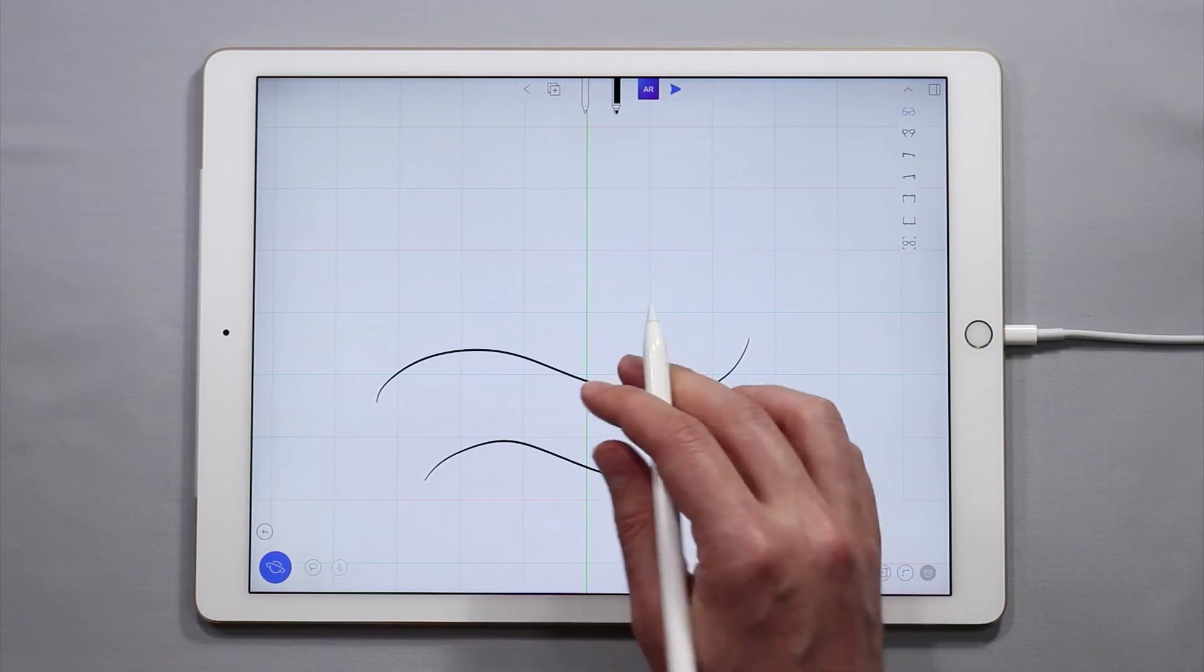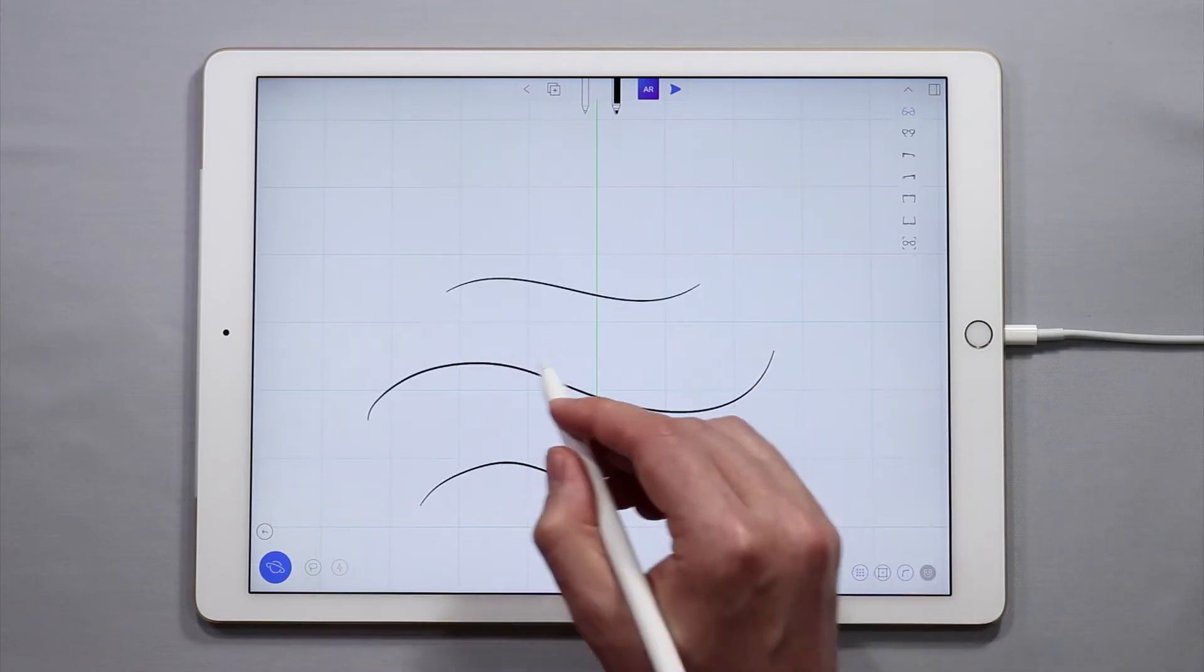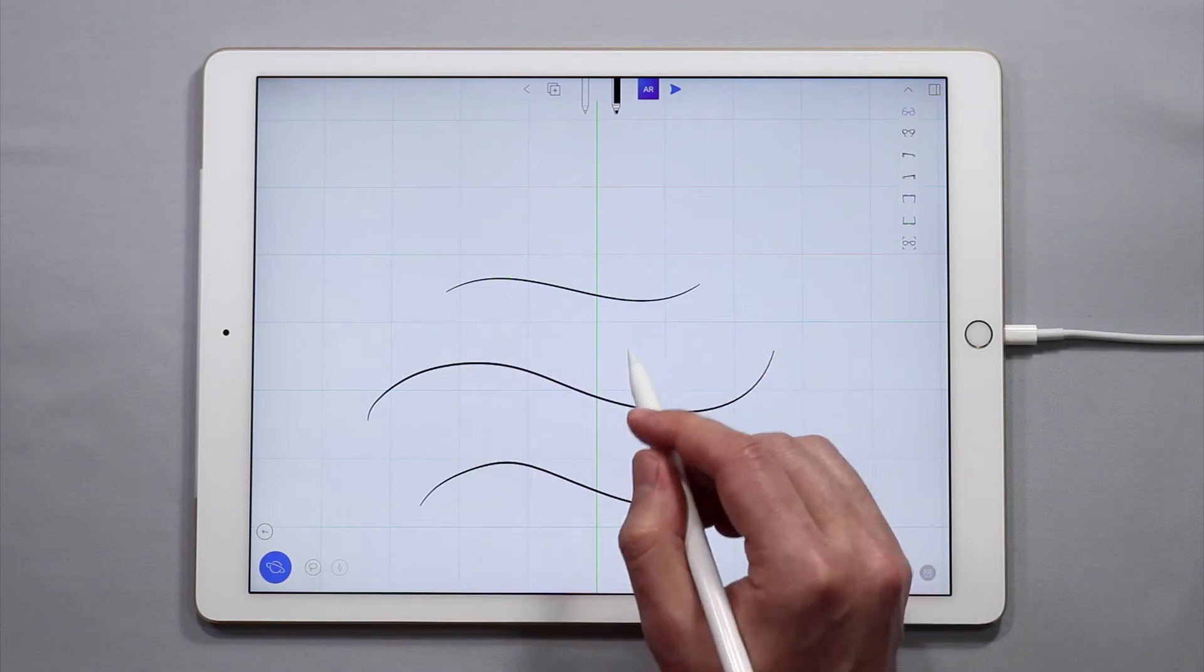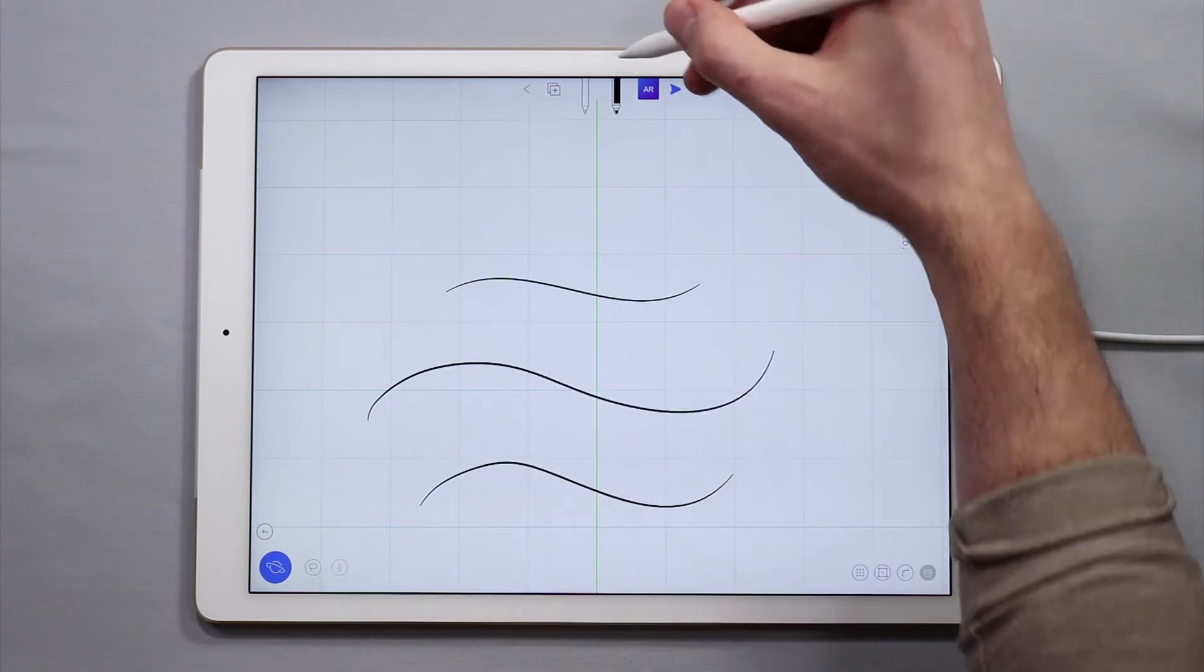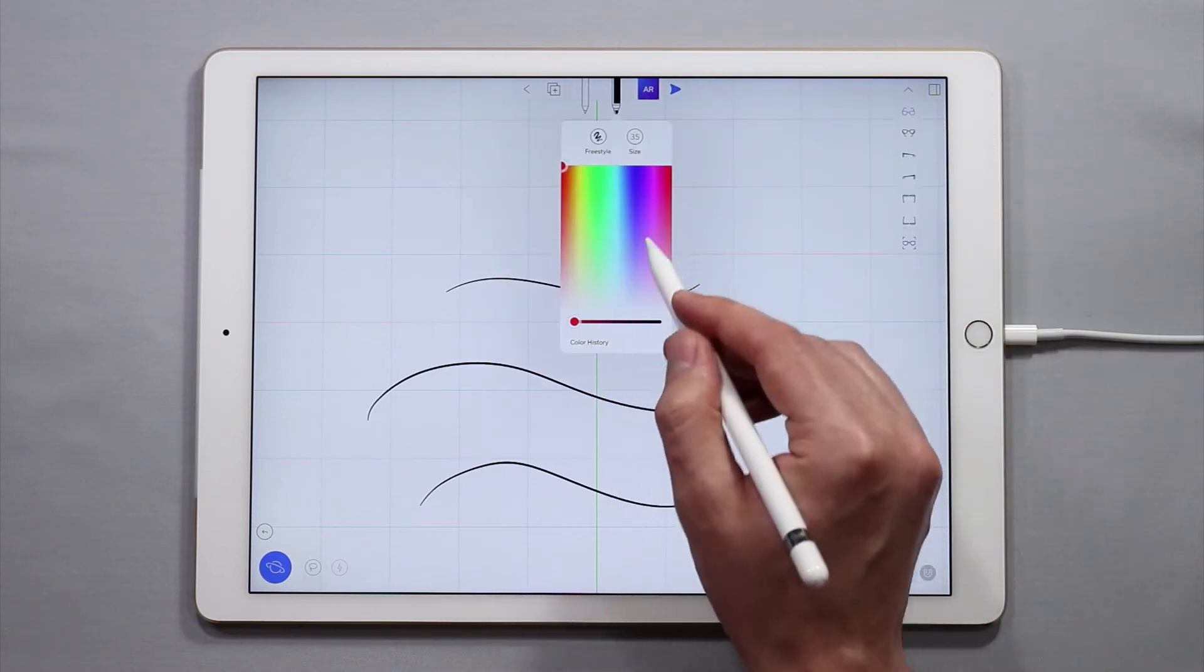Now when you create a curve, by default when you first open up UMake, the curves are black. If you want to change the color you can come up to your tools in the top menu here and you have the ability to change the color, to change the size.